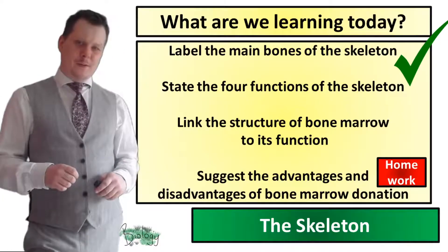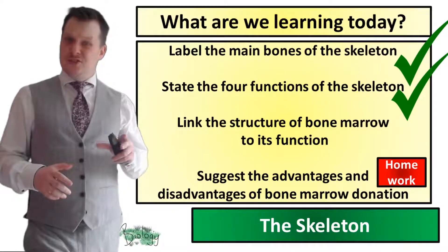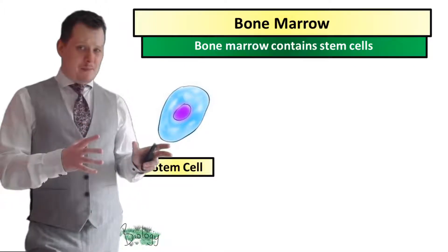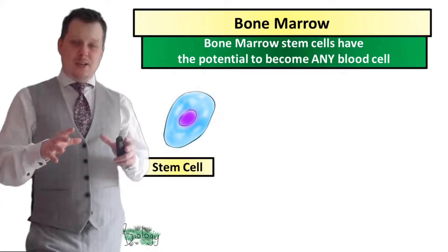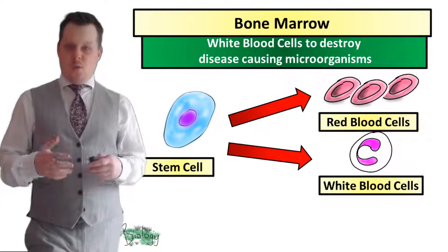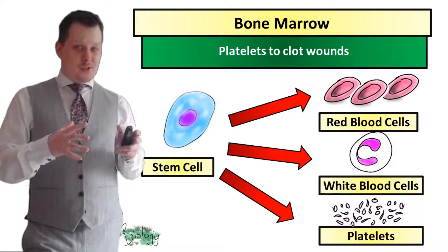We've stated the four functions of the skeleton so we can check that off our list. Next we need to link the structure of the bone marrow to its function. Bone marrow contains stem cells and stem cells have the potential to become any blood cell: a red blood cell to carry oxygen, a white blood cell to destroy pathogens, or platelets which help to clot wounds.